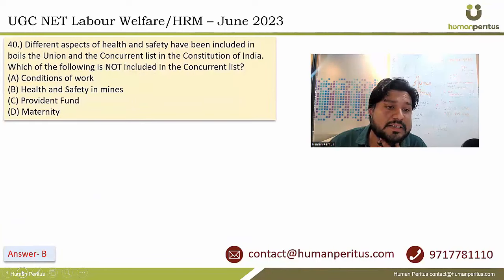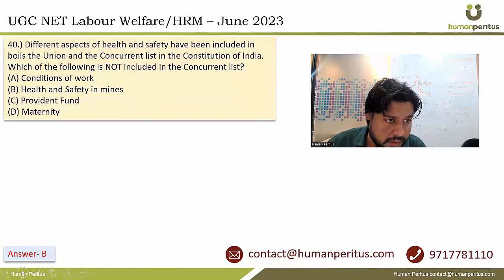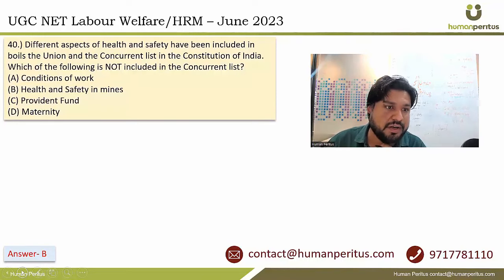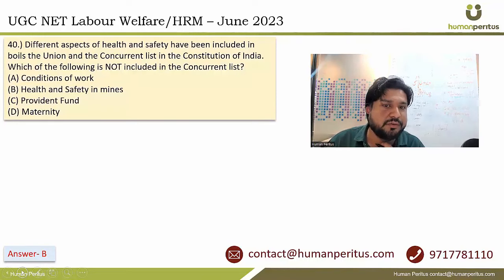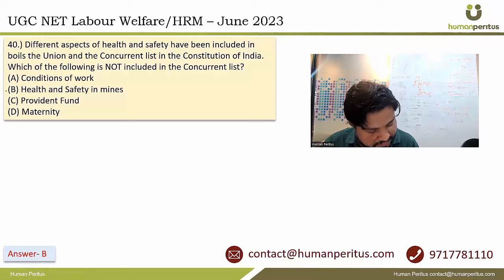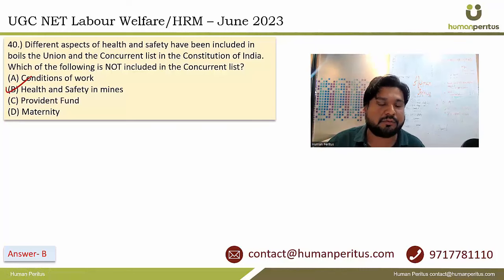Different aspects of health and safety are included in both the Union List and the Concurrent List in the Constitution of India. Which of the following is not included in the Concurrent List? Health and safety in mines is not included in the Concurrent List — it falls only under the Union List.